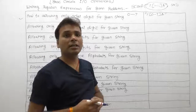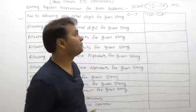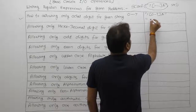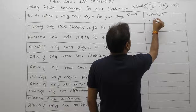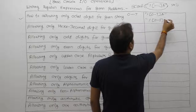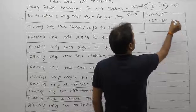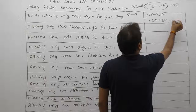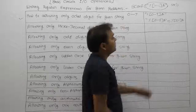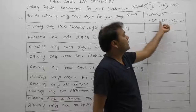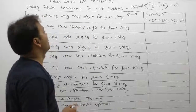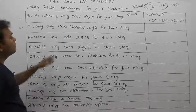Similarly, for binary numbers, the possible digits are only 0 and 1. So the regular expression for binary would be: percent, square bracket, 0 to 1, closing square bracket, 's'. This reads only 0 and 1 — only binary digits — stored as a character array.